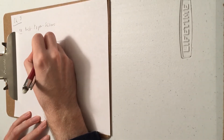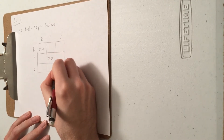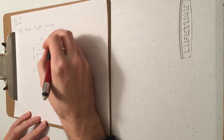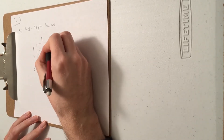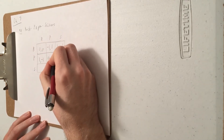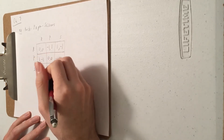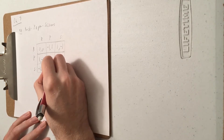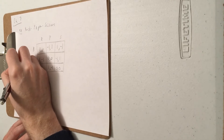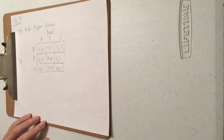You play rock and your opponent also plays rock — that's a tie, so 0-0. Rock loses to paper: minus 1 for rock, plus 1 for paper. Rock beats scissors. Paper beats rock. Paper loses to scissors. Scissors lose to rock and scissors beat paper. Our players: let's have Tim as our row player and Yusuf as our column player.